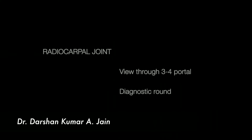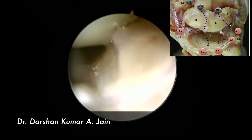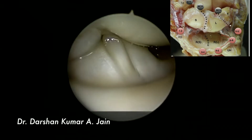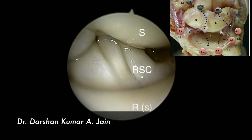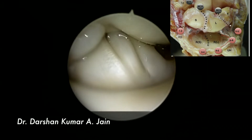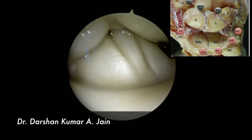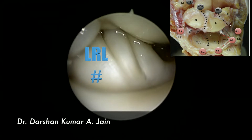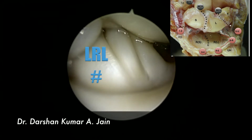Once the scope is inside the radiocarpal joint, first you see the RSC ligament, the scaphoid, and the scaphoid fossa on the radius. Next is the long radiolunate ligament towards the ulnar side.